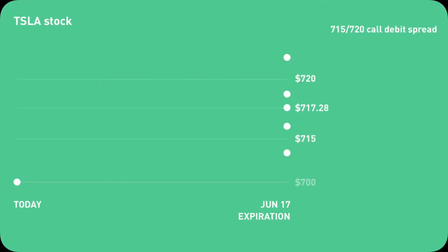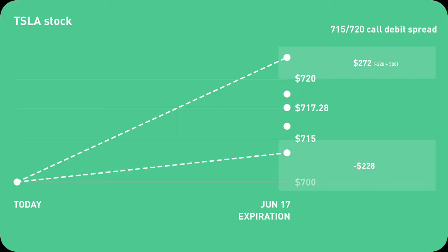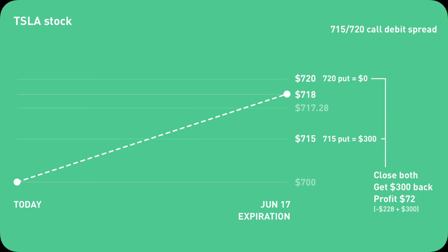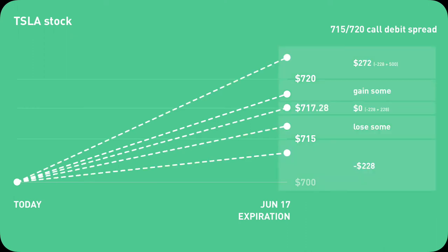The outcome of any call debit spread has 5 scenarios. If Tesla's stock ends above $720, you win — you close the position, you get $500 back, minus the cost, you profit $272. If Tesla's stock ends below $715, you lose all $228. If Tesla's stock ends at $717.28, you break even — you close the position, you get $228 back, net zero. If Tesla's stock ends between $720 and $717.28, you profit a little bit — say it ends at $718, the $715 call price will become $300, the $720 call price will be $0, so you get $300 back, minus $228, you profit $72. If Tesla's stock ends between $717.28 and $715, you lose a little bit. This is a chart I designed to capture the scenarios — you cannot find this chart anywhere else. Robinhood has its own interactive chart, which is a bit too mathematical, but at least you have something to work with.